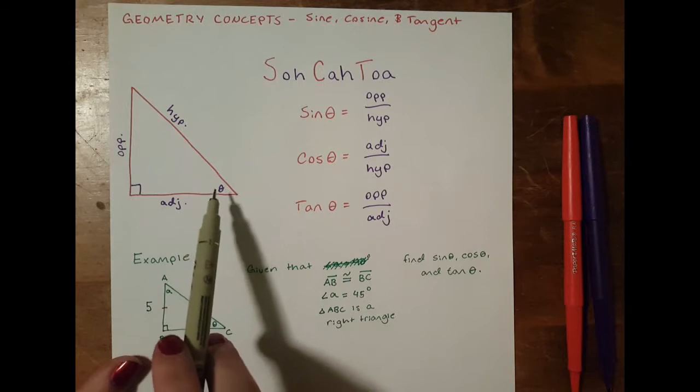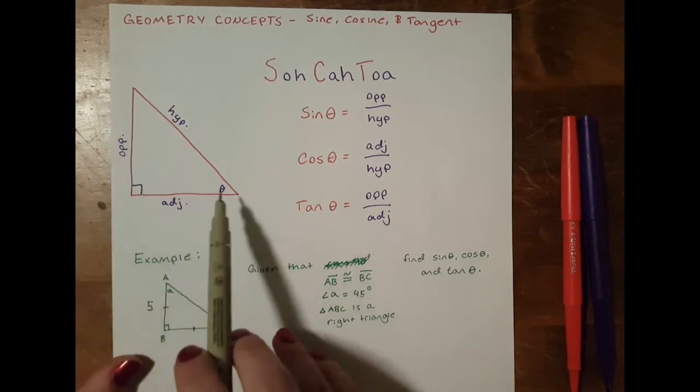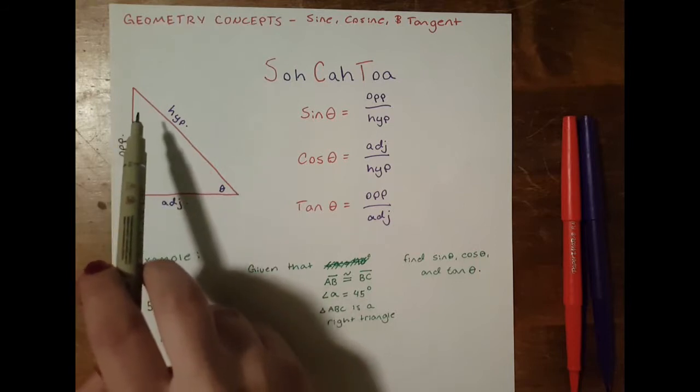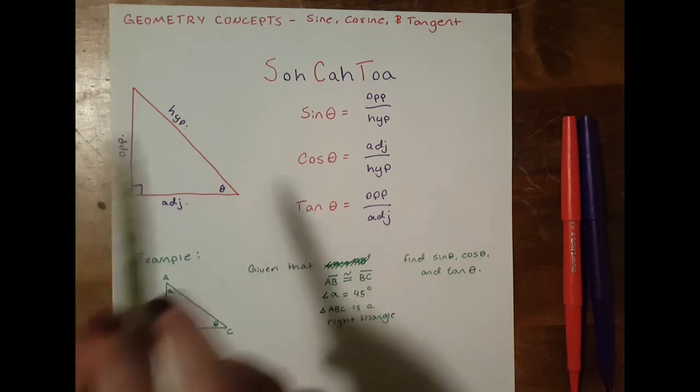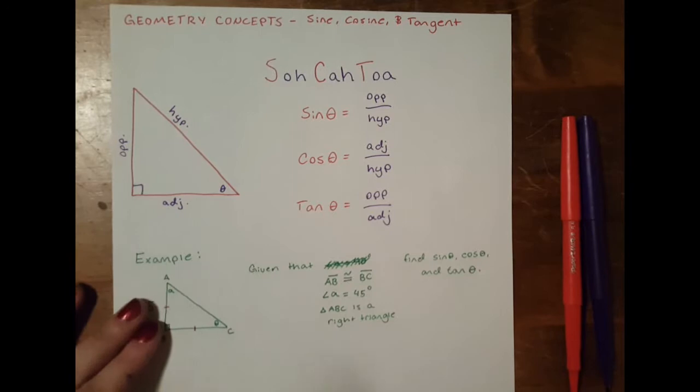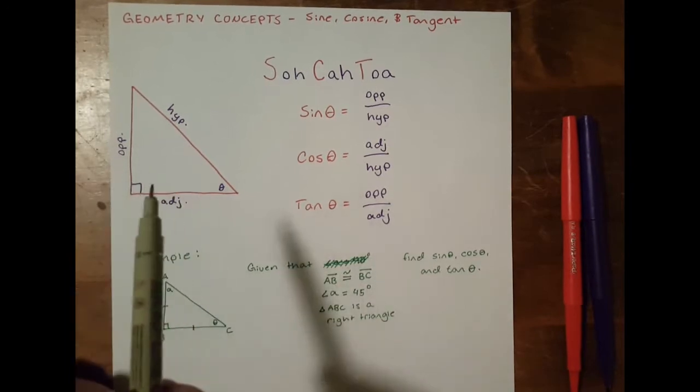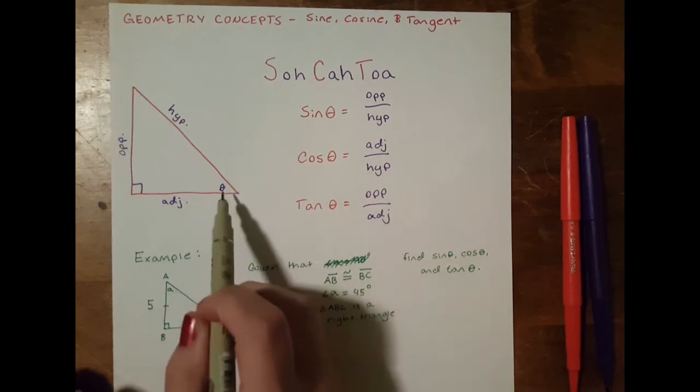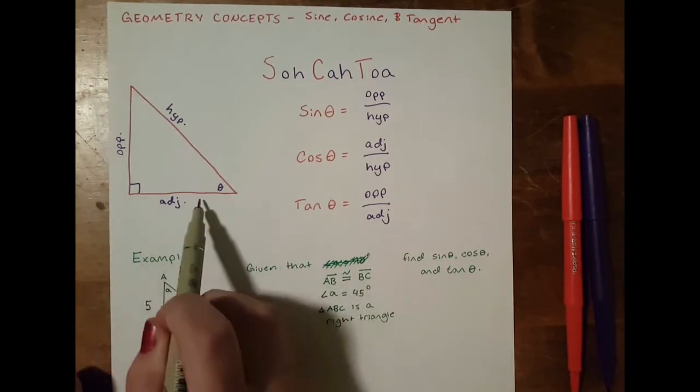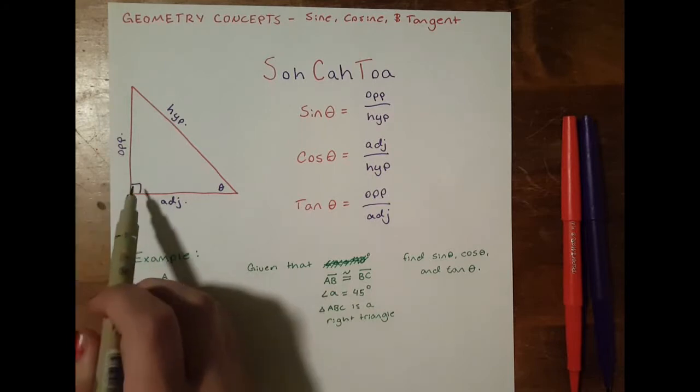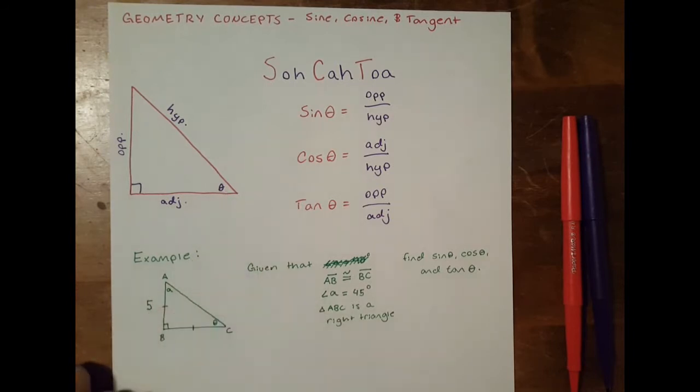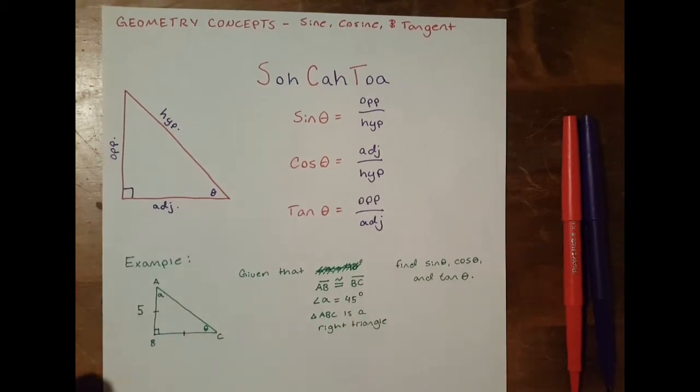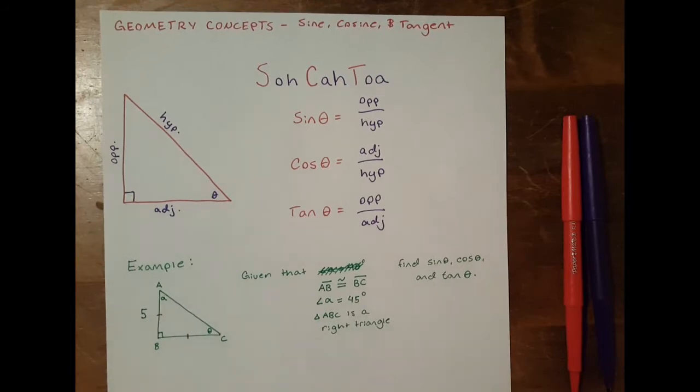Basically, you have a right triangle where this angle is always 90 degrees and you have an angle represented by theta. Theta can be in this corner or in this corner. For our purposes, I'm going to represent it in the bottom right. When we're talking about the sides of a triangle, we're talking about them in relation to theta. So this side here is adjacent to theta, this side is opposite to theta, and this side is the hypotenuse of the triangle.